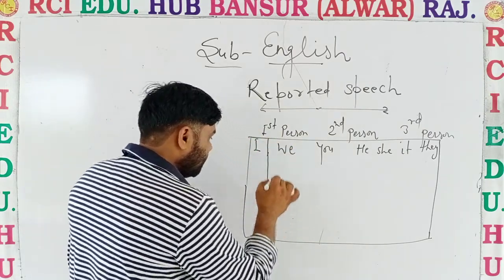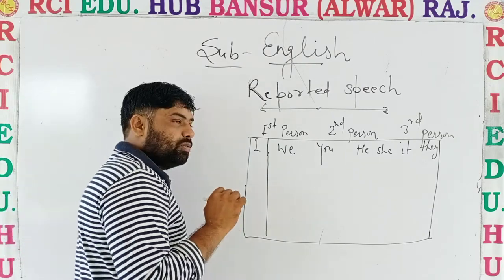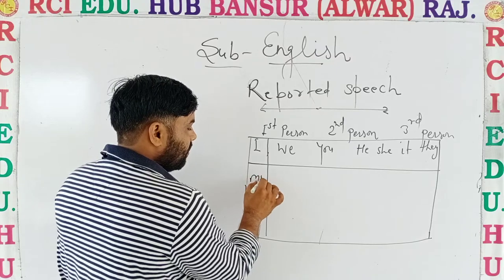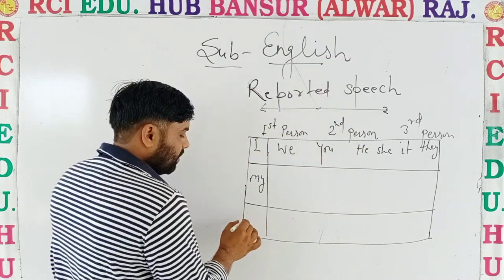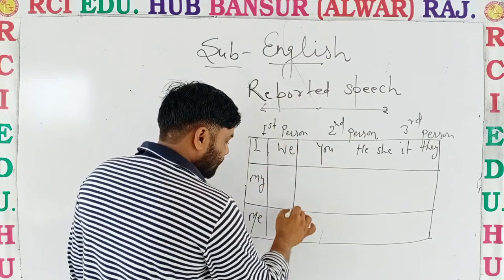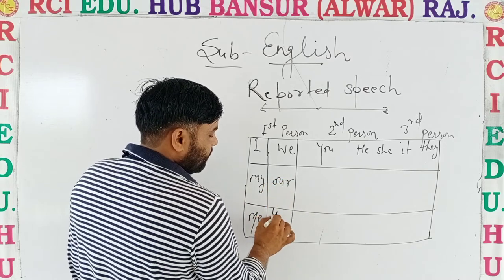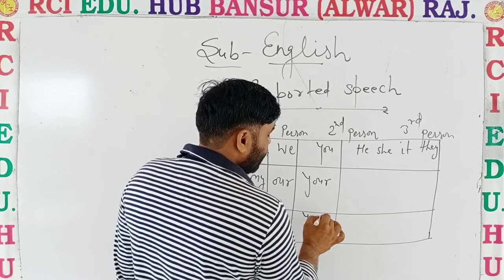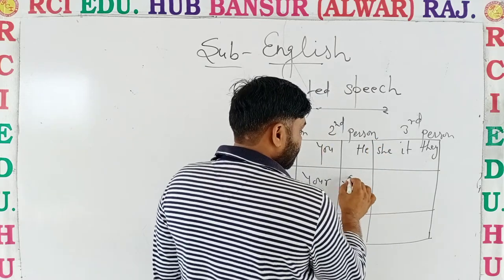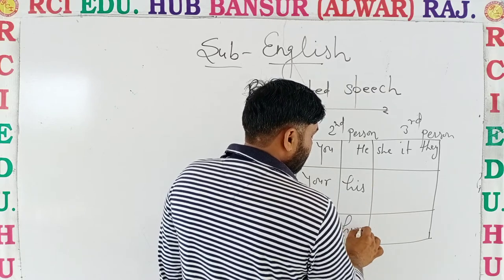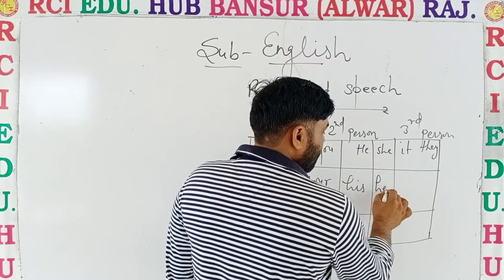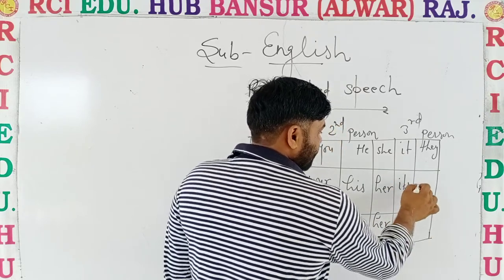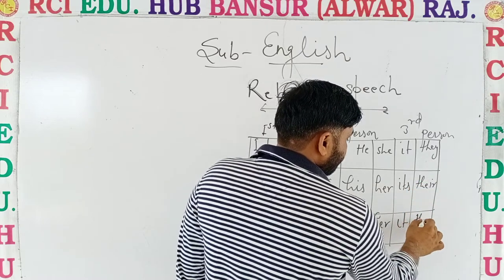Dear students, we are also talking about reflexive and possessive forms. The second forms are: first person - I, my, me; we, our, us. Second person - you, your, you. Third person - he, his, him; she, her, her; it, its, it; they, their, them.